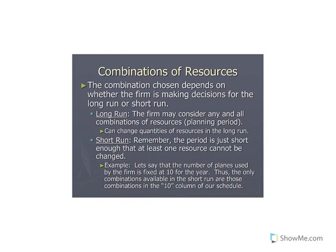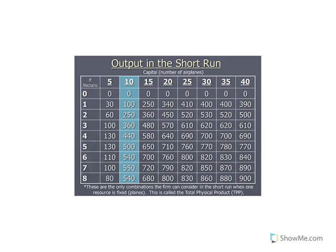Let's say for our airline we're making a short run decision — deciding how much output to produce within this year. The only combinations we can look at depend on the fixed capital we have. Assuming our airline currently has ten airplanes, those become the only output combinations relevant to us. All other combinations involving fifteen, twenty, twenty-five, or thirty planes don't apply because we only have ten planes in the short run. We can vary the number of mechanics to alter output, but we cannot vary the number of planes.